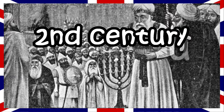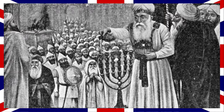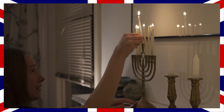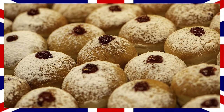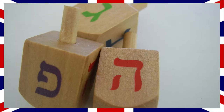In the second century BC, Jerusalem was ruled by Syrians. When the Jews revolted and won, they had to rededicate the temple to God. However, there was only enough sacred oil for one night to keep the candles of the menorah burning. The candles burned for eight nights, and they could make more oil during that time. Jews celebrate not only by lighting candles but also by eating oily foods and playing special games.